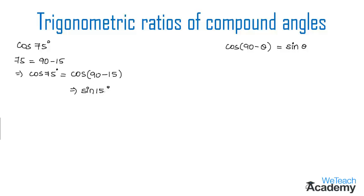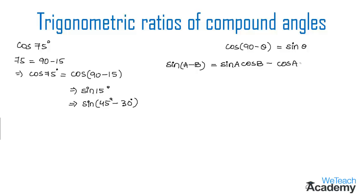Now we can write sin 15° in the form of sin(45° - 30°). It is now in the form of sin(a - b), so we use the formula sin(a - b) = sin a cos b minus cos a sin b. Expanding sin(45° - 30°), we get sin 45° into cos 30° minus cos 45° into sin 30°.